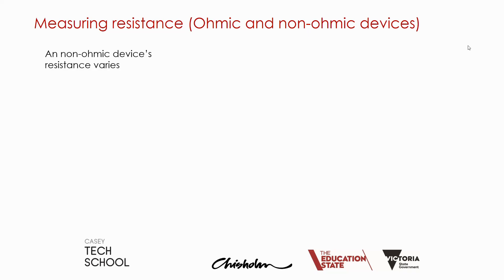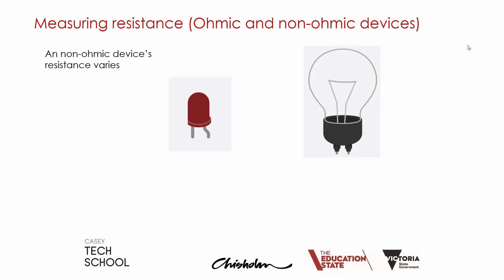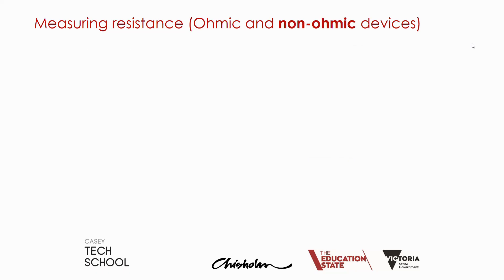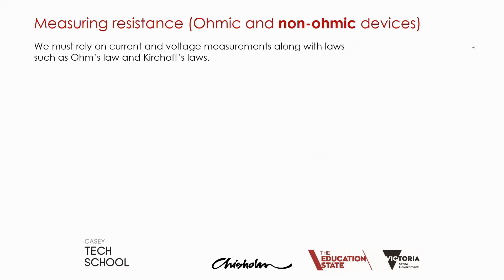A non-ohmic device has a resistance which varies with the applied voltage — if we change the voltage, the resistance will change. Examples include an LED and also things like light bulbs. So we really can't use a multimeter to measure their resistance. The only thing we can do is rely on measurements we've already taken — such as current and voltage — along with using laws such as Ohm's law and Kirchhoff's voltage and current laws.